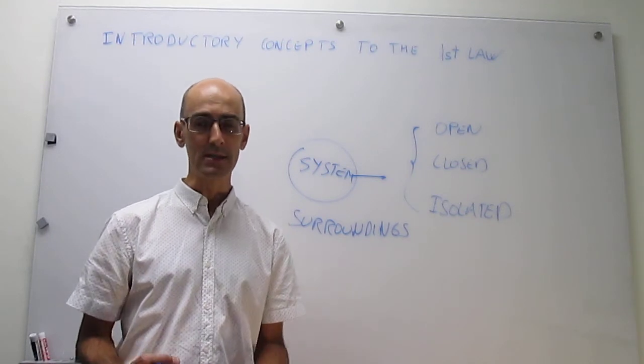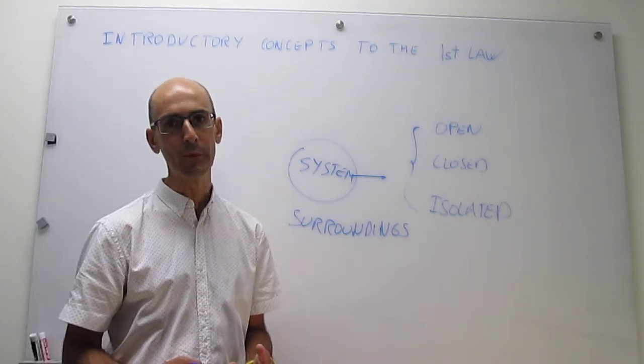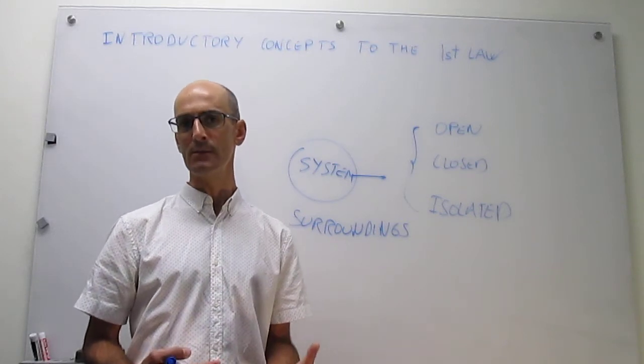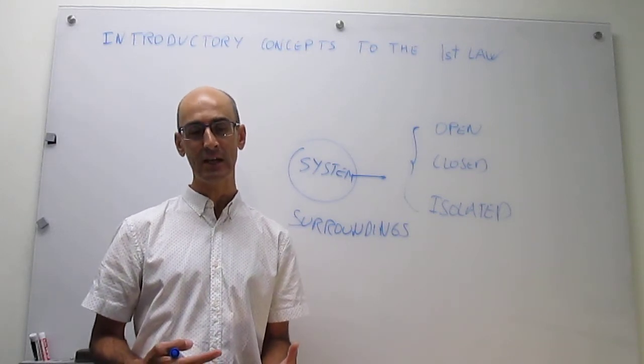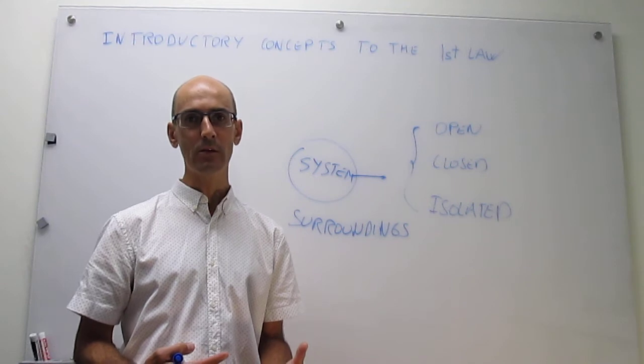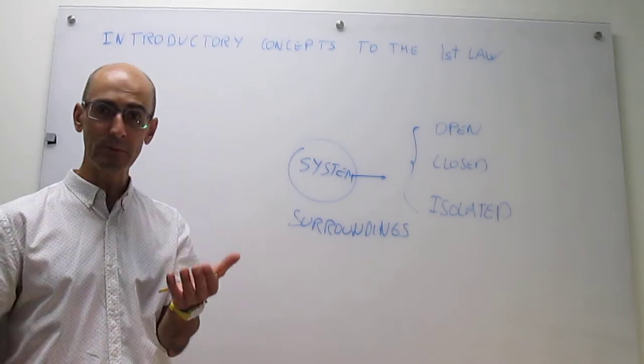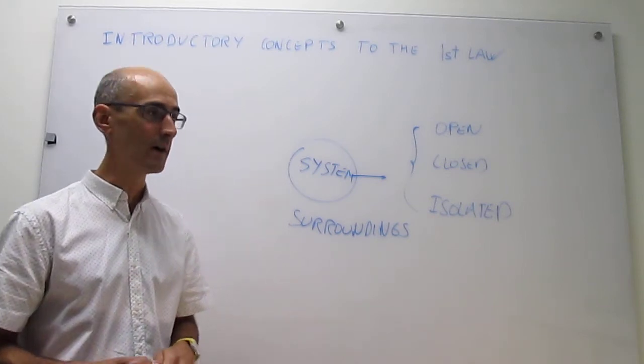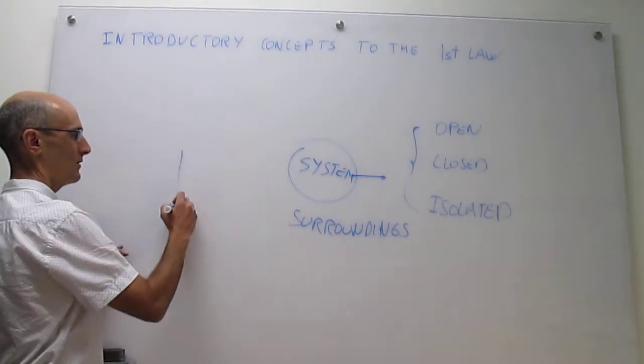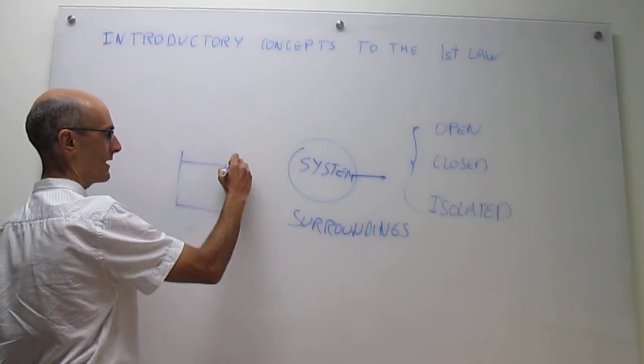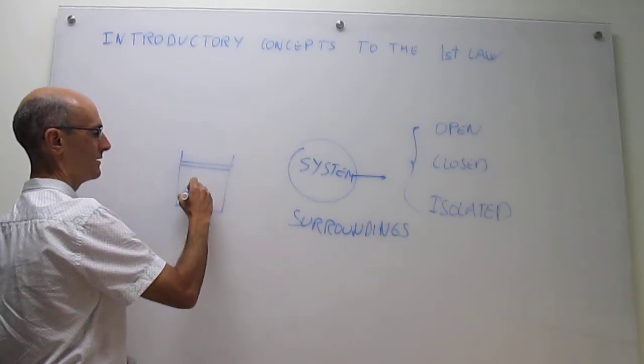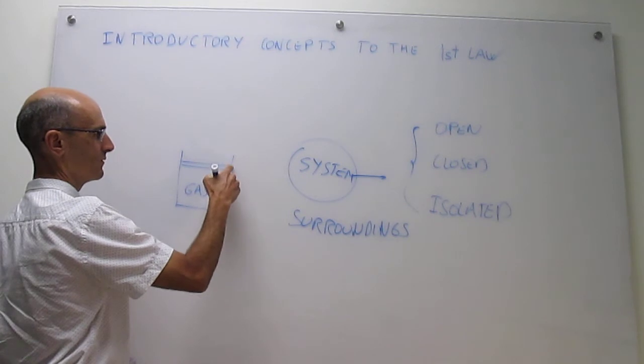Now, let's think about a closed system, which are also going to be quite important for us. A closed system is one in which you can exchange energy with the surroundings, but there can't be any mass exchange. Examples of a closed system are going to be very common as well.